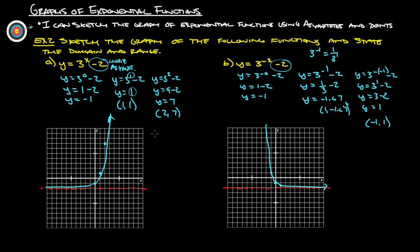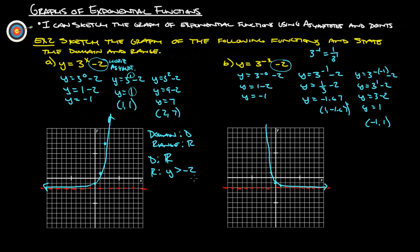We forgot to state the domain and range — that's pretty important. Domain is what the x's can be. This function can go forever to the left and forever to the right, so the domain is all real numbers. For the range, we have the asymptote at negative two — this will never cross negative two. So the y-value must be greater than negative two; it can't equal negative two because that's the asymptote. So y is greater than negative two is the range.